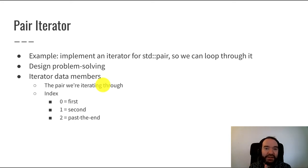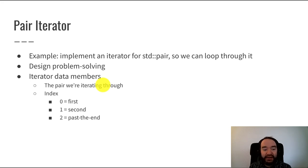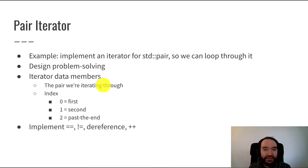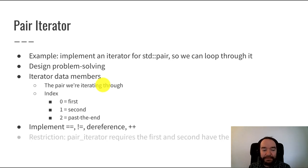I'll mention there are other ways of doing this — for example, you could use an enumerated type with values like at_first, at_second, past_end. But I'm going to pick something relatively simple and run with it. So what we need to do now is implement those operations: equal, not-equal, dereference, and plus-plus, based on this design.